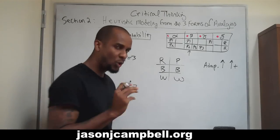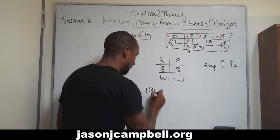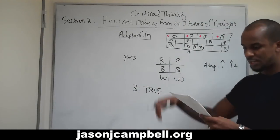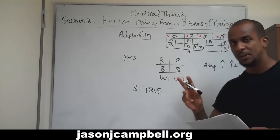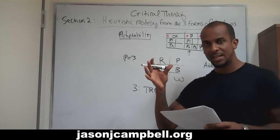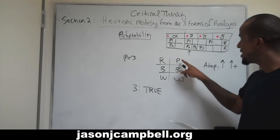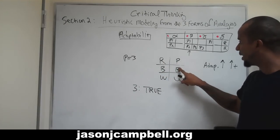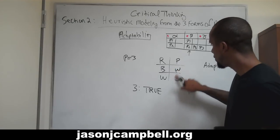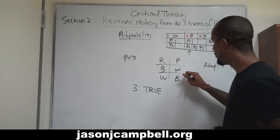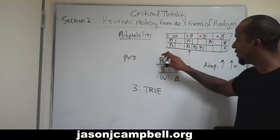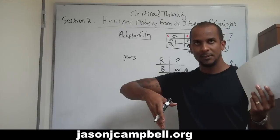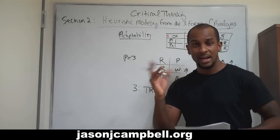Number three is true. Adaptability decreases — there's an inverse relationship between adaptability and negative analogical relations. The more negative relationships we have, the less adaptive they are. So I change my shirt from red to purple, my jeans from blue to white, my shoes from white to black. I have very high negative analogical relationships and a very low level of adaptability. So there is an inverse relationship between adaptability and negative analogical relations.